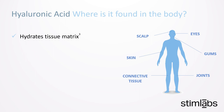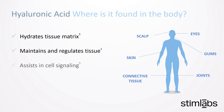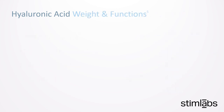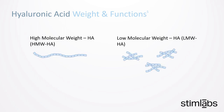On top of its structural properties, HA plays a critical role in tissue maintenance, regulation, and signaling. It helps modulate inflammation, having both pro- and anti-inflammatory properties. The majority of HA signaling depends on the HA molecule itself. HA molecules vary in the length of their disaccharide chains, giving us both a high molecular weight and a low molecular weight HA.